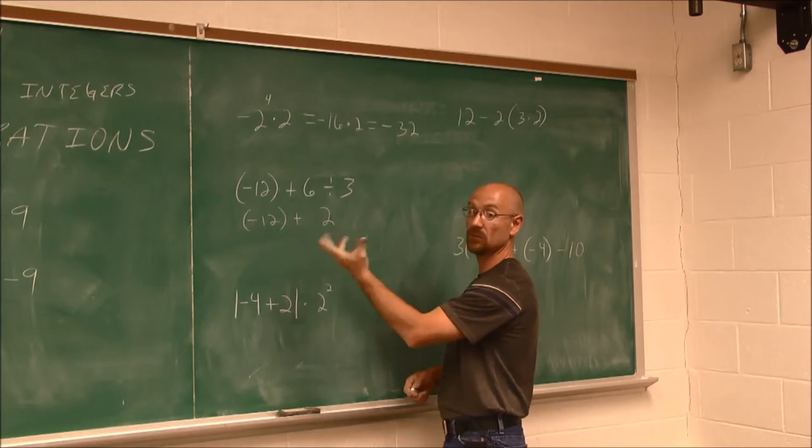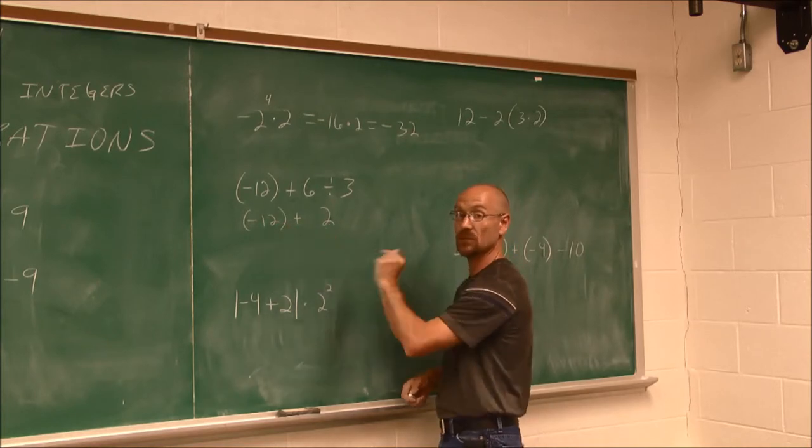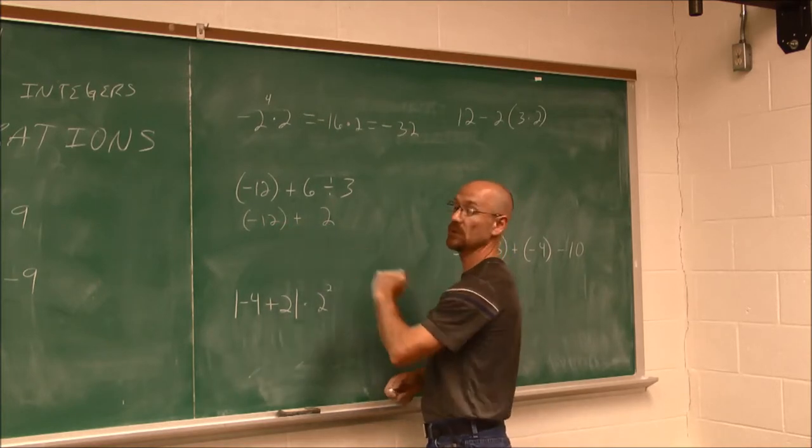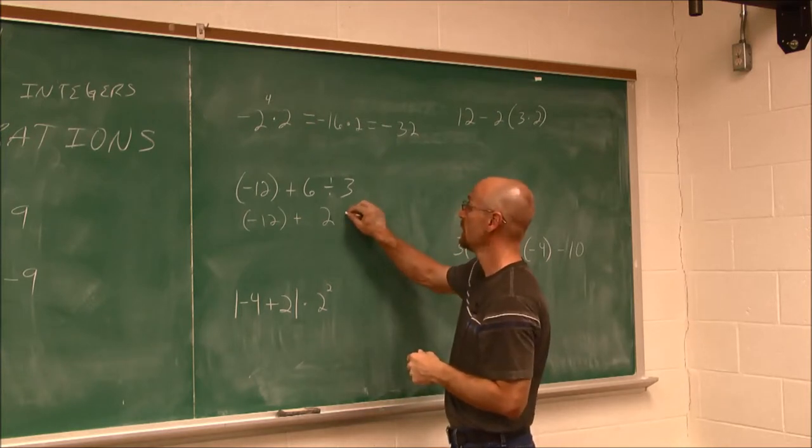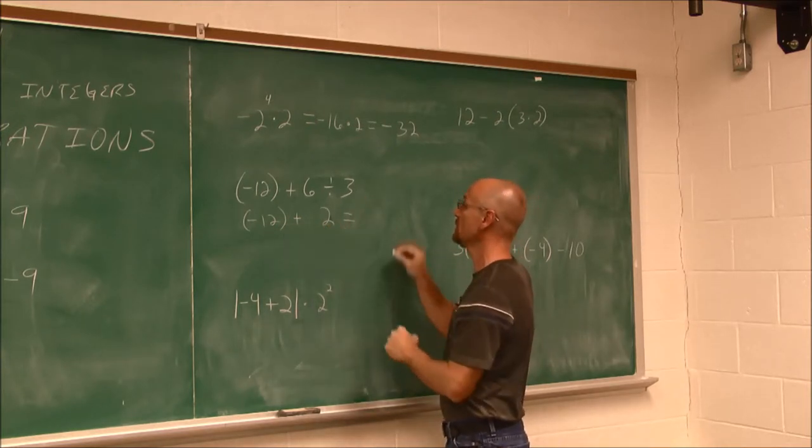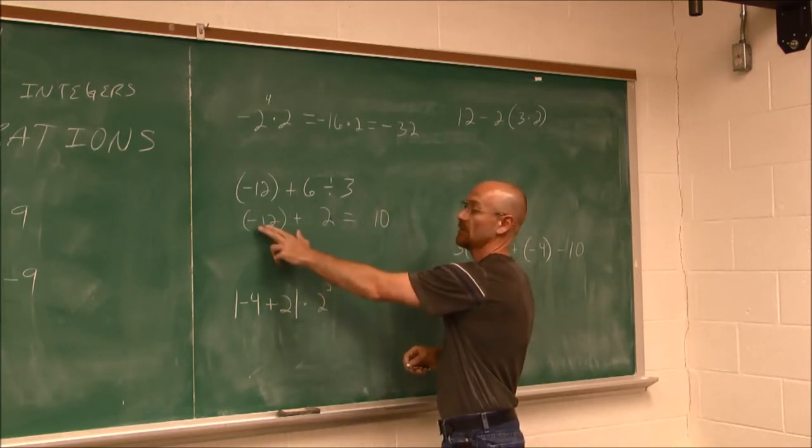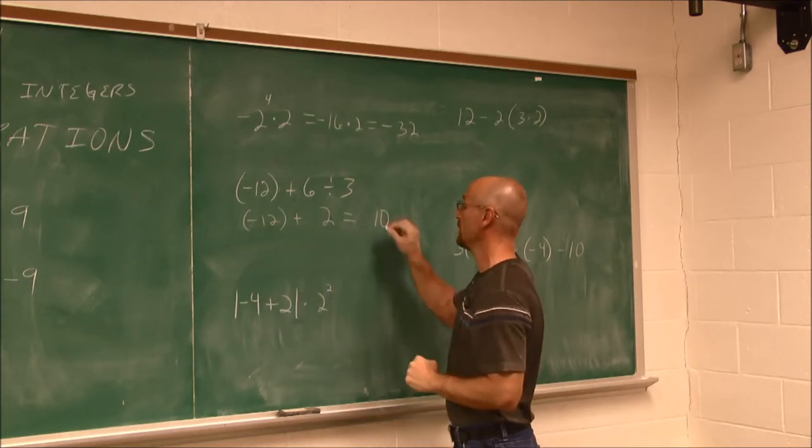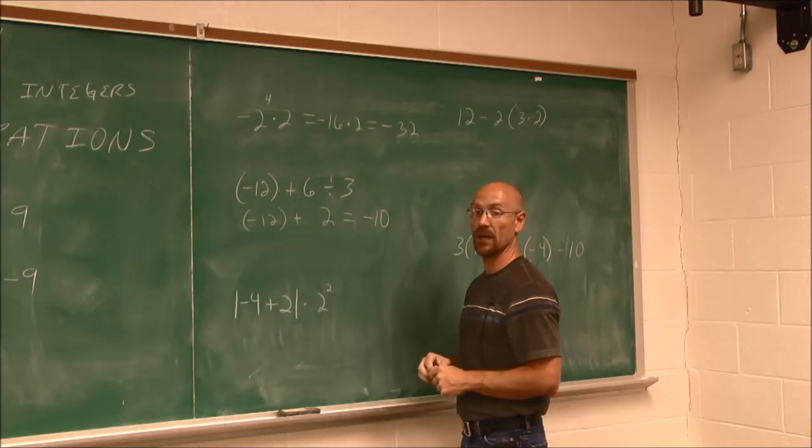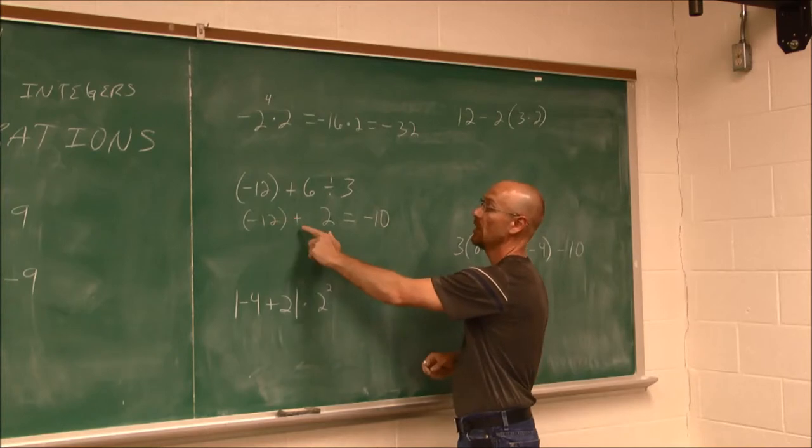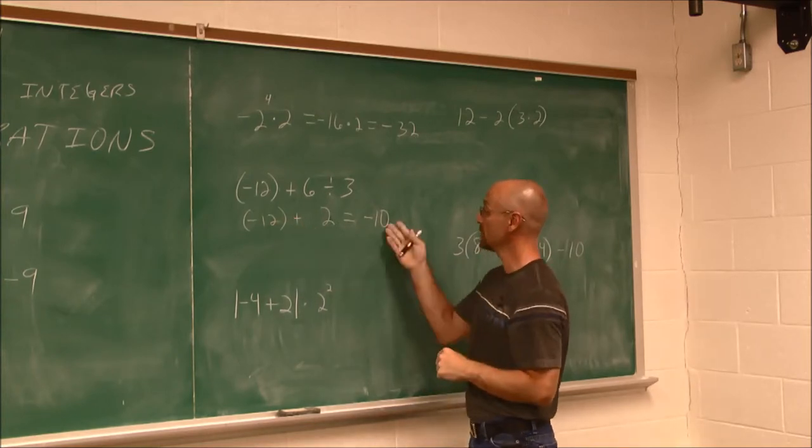And now I have the integer of negative 12 plus the integer of 2. Well, they have opposite signs, different signs. Now it's just addition, so we use those rules. Different signs, I'm going to find their difference. The difference of 12 and 2 is 10. I assess the larger value is negative, so it makes my answer negative. Negative 12 plus 2 is negative 10.